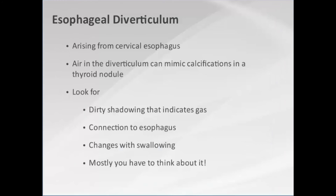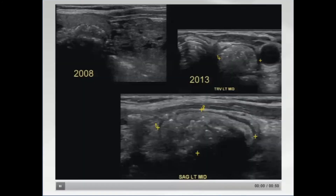Remember that an esophageal diverticulum can occur in the neck, arising from the cervical esophagus. When air goes into the diverticulum, it can mimic the calcification of thyroid cancer. Things that help differentiate: you won't have dense shadowing of calcium — you'll have dirty shadowing from gas. You should be able to connect it to the esophagus. If you ask the patient to swallow, it will change configuration. Mostly, you just have to think — could this be an esophageal diverticulum?